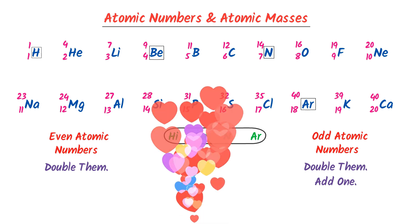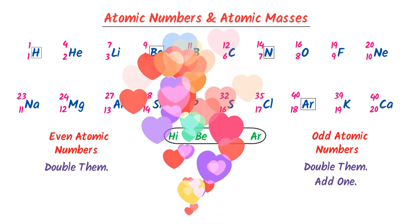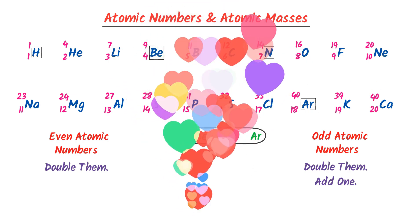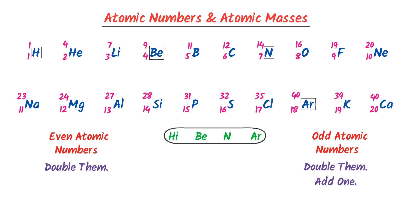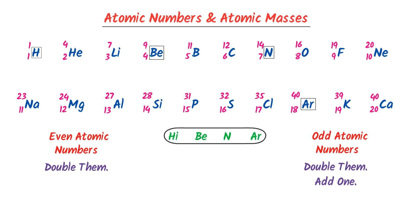Thus, using these two tricks, we can easily write the atomic masses of any element. Therefore, using Bollywood references, we can easily write the first 20 elements of the periodic table, including their atomic numbers and atomic masses.